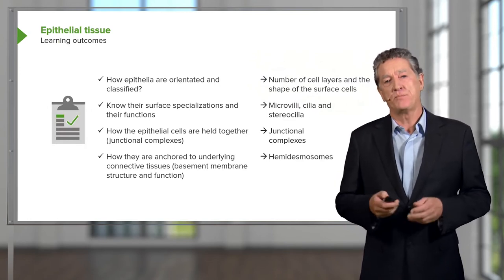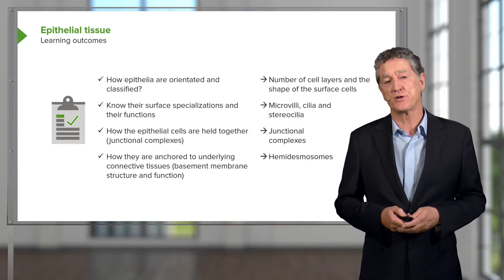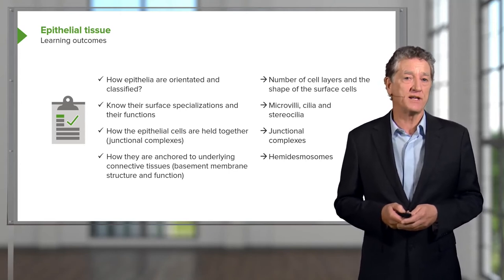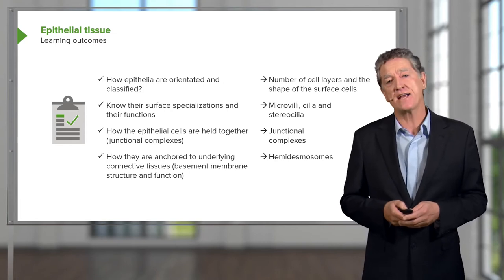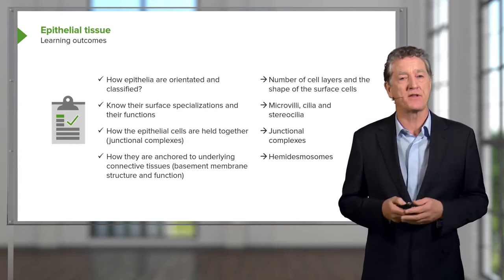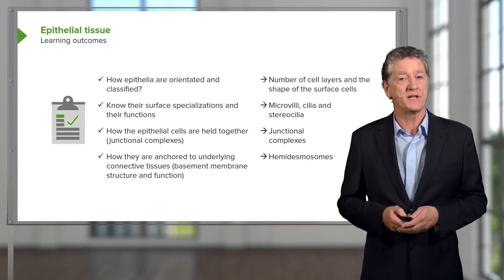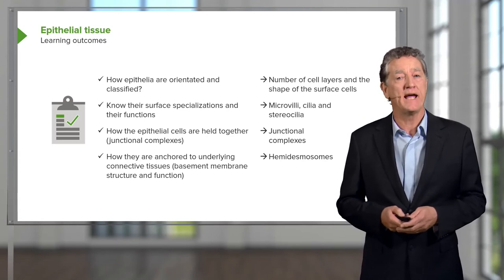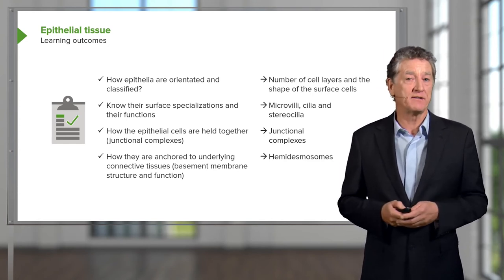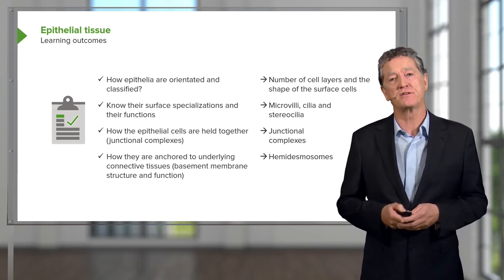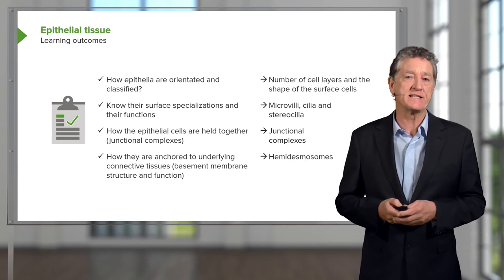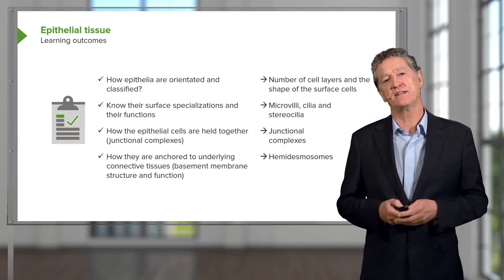In summary, it's important you know how we name epithelia, the specialisations on the surface of epithelial cells, the ways cells are held together by junctional complexes, and how they're anchored by the underlying basement membrane. The anchoring of epithelium to underlying connective tissue is done by hemidesmosomes — similar to macular adherents. I hope you now appreciate what epithelia do in the body, as this will help you identify different organs and tissues and understand their functions.